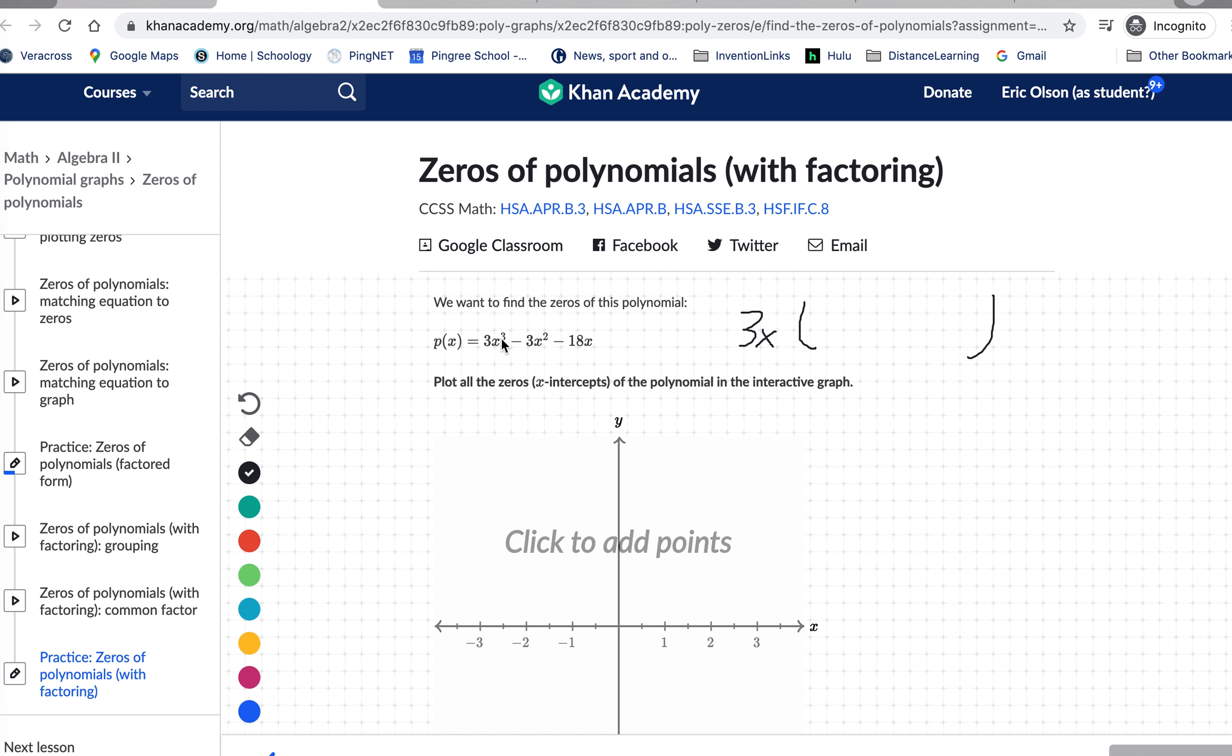And then what gets left behind is going to be a quadratic. When I pull out a 3x from there I'm left with x squared. When I pull a 3x out of that I'm left with minus x. And then finally when I pull a 3x out of 18x, I will get a negative 6. I'm sorry I can't write better, but then when I factor this I'm going to get x minus 3.